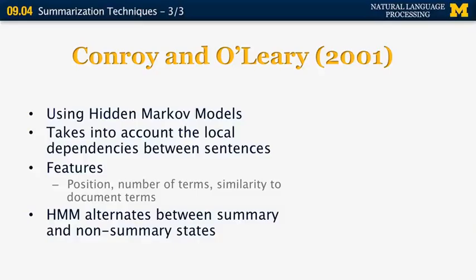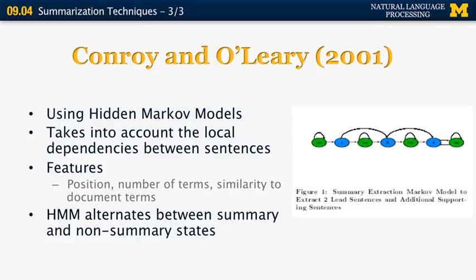So the HMM alternates between summary and non-summary states. You have the probability of staying in a summary state or of leaving a summary state going to a non-summary state and so on. All the four possible combinations. So here's an example from the Conroy and O'Leary paper. You have green and blue sentences that tell you whether you want to include the sentence in the summary or not.